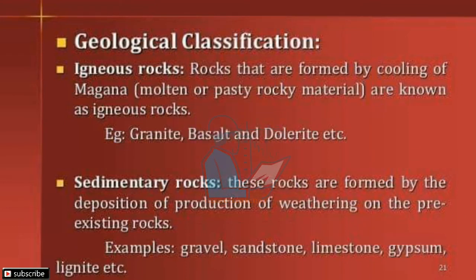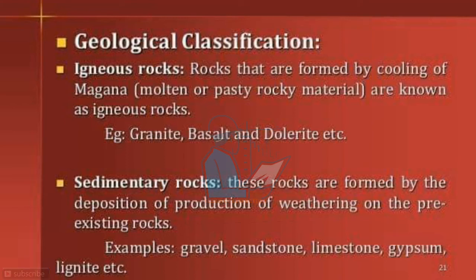Geological classification: Igneous rocks are formed by the cooling of magma — like volcanic rocks. Molten or pasty rock material that has solidified is known as igneous rock. Examples include granite, basalt, and dolerite.